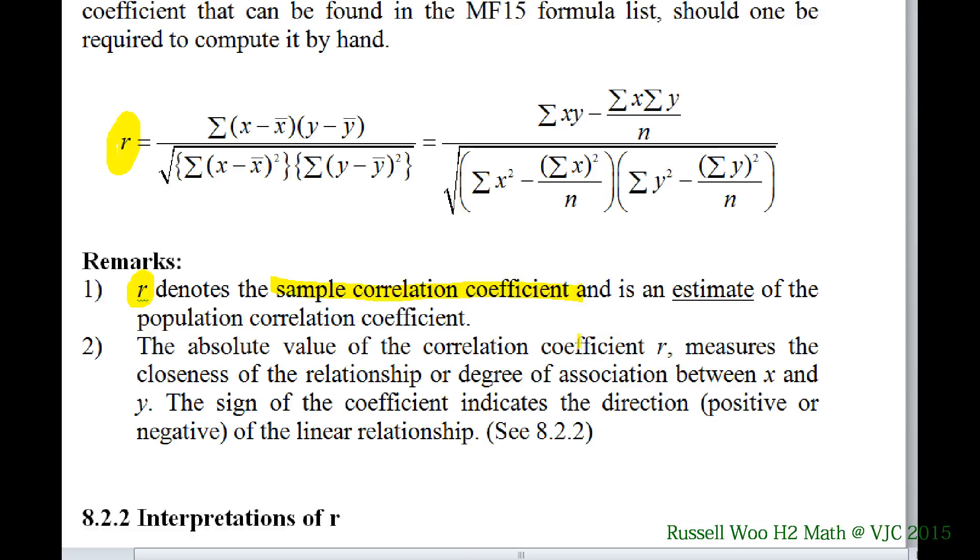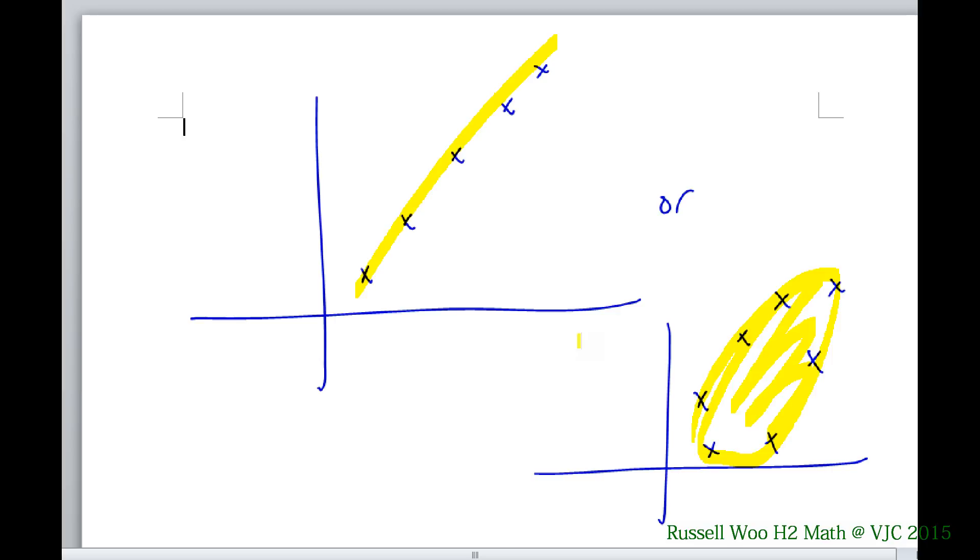The sign of it will tell us whether it's positively correlated or negatively correlated. One more time—this is an example only. Maybe r equals 0.9, this one r equals 0.6.